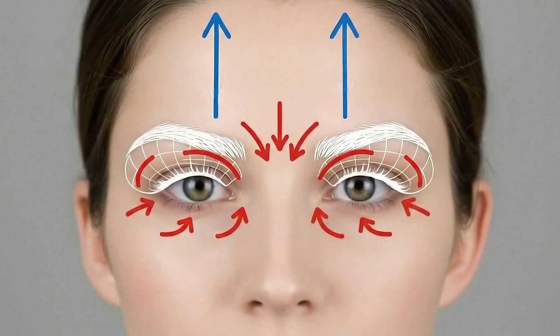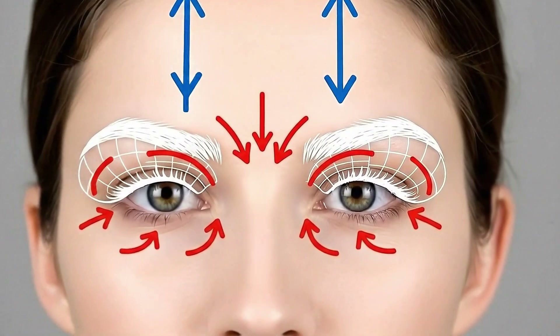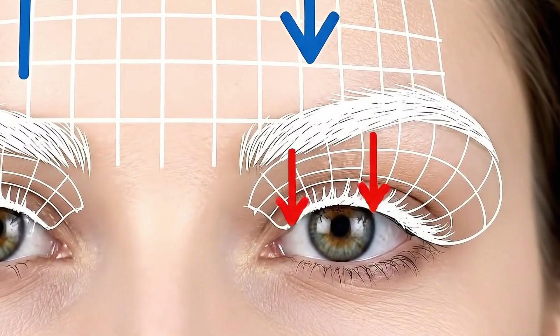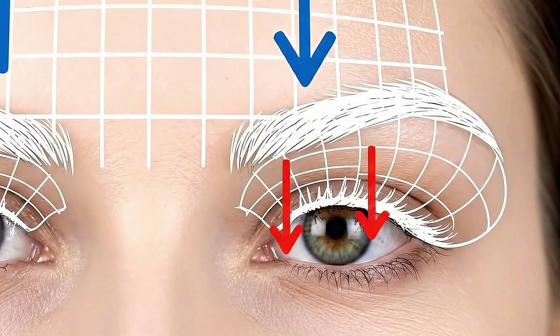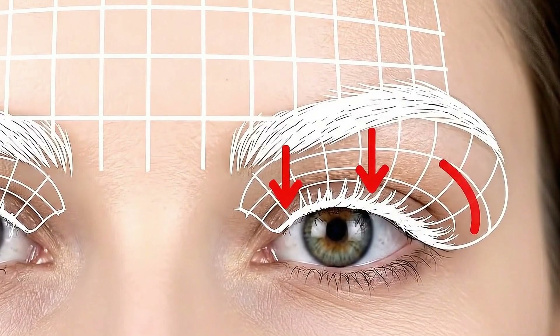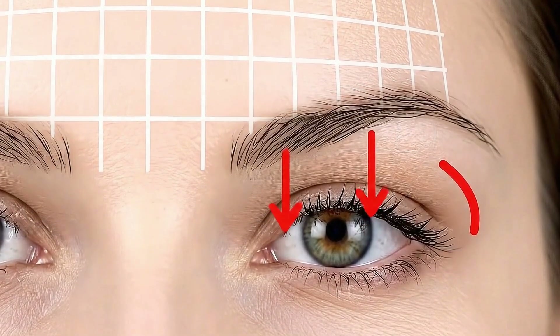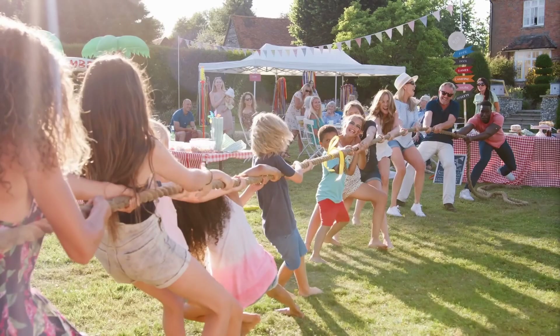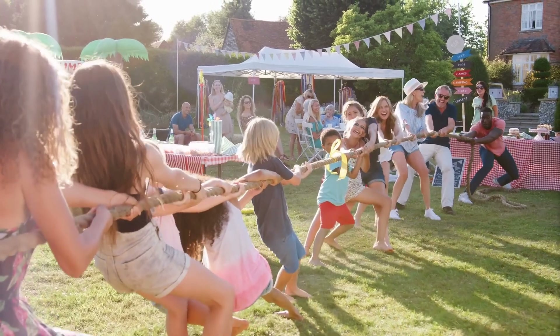The second way that neuromodulators can alter the position of the eyebrow is by altering the vector across the eyebrows. Vectors are simply a force with a particular direction, and the eyebrow is held in a balanced position by the forces from all the muscles. You could think of the eyebrow as being in a tug of war.